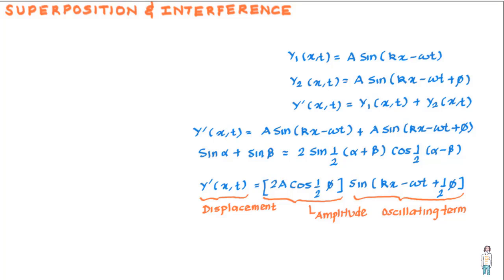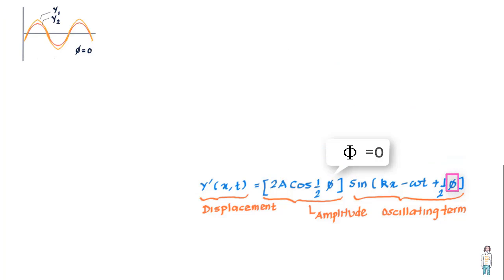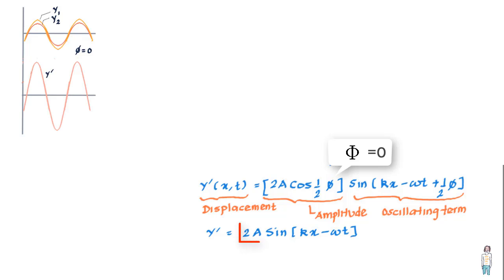To summarize: if two sinusoidal waves having the same amplitude and wavelength travel in the same direction along a straight string, they interfere to create a resultant sinusoidal wave traveling in that direction. If we put φ = 0 radians, the two waves are in phase and the equation becomes y' = 2a sin(kx − ωt), giving the greatest amplitude — the sum of the amplitudes of the two waves.